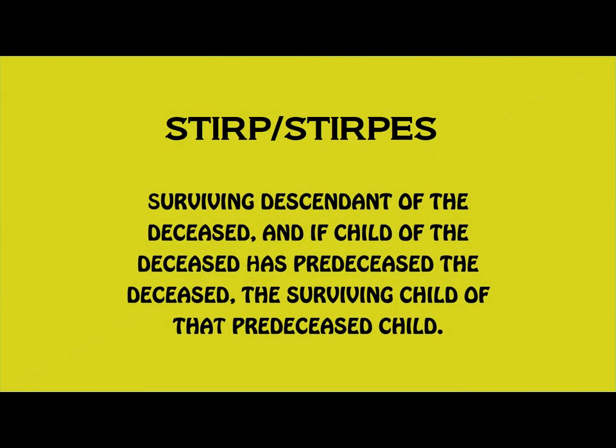The final term that we will look at is stirps or stirpies. Here we are looking at a line of descendants of common ancestry. I like to think of stirps or stirpies as branches of a tree. These branches will include every descendant of the deceased who survives the deceased, or a pre-deceased descendant of the deceased who leaves living descendants.